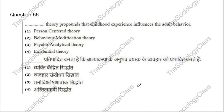Question 56: Which theory propounds that childhood experiences influence adult behavior? Since psychology questions can be tough, search for all topics you encounter. The correct answer is C — psychoanalytical theory. You still have a few days left, so read through these topics carefully.